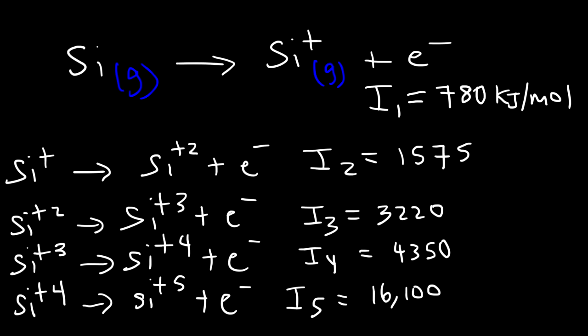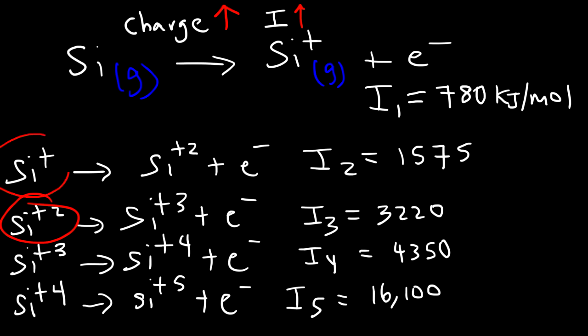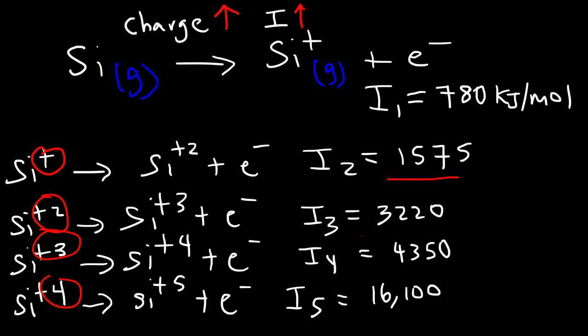Notice that as the charge of the gaseous atom or gaseous ion increases, the ionization energy increases with it. It is harder to remove an electron from the silicon 2+ ion than from the silicon 1+ ion. As the charge of the ion increases from 1 to 2 to 3 to 4, the ionization value increases — that's the first thing to keep in mind.